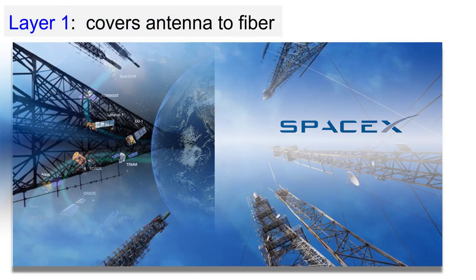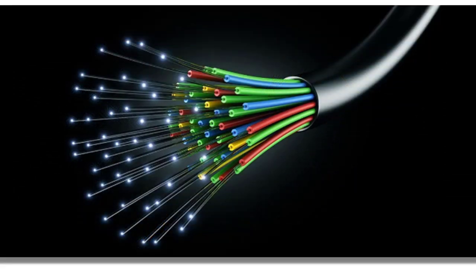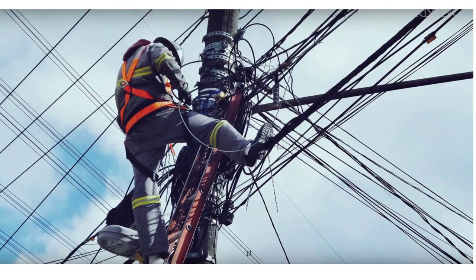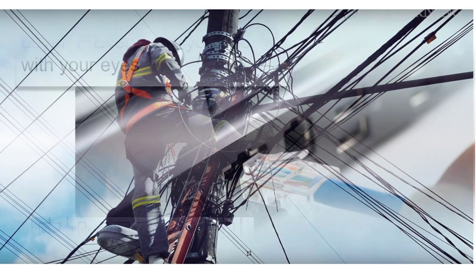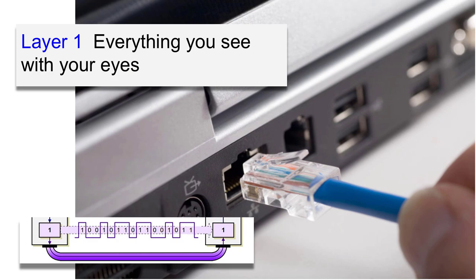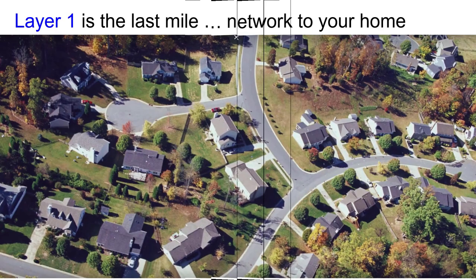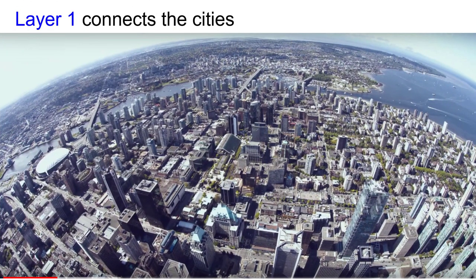Layer 1 covers antennas and fiber and those millions and millions of miles of buried cable. Layer 1 is found on those poles. Layer 1 is jacks, plugs, and cables. Layer 1 is that coax cable that brings TV and internet to your home called the last mile.